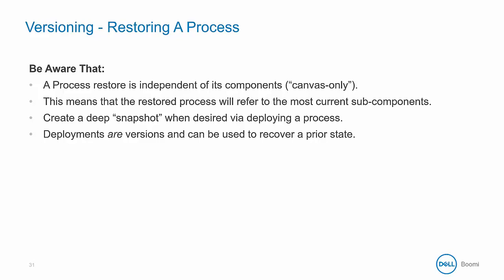If that is exactly what you want to do, you can achieve this effect by taking snapshots at your desired points and then deploying the process. Deployment is the version of a process — the canvas and subcomponents all included together — and it can be used to restore a process to a prior working version.